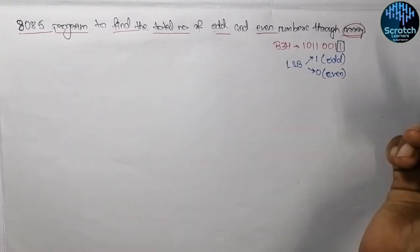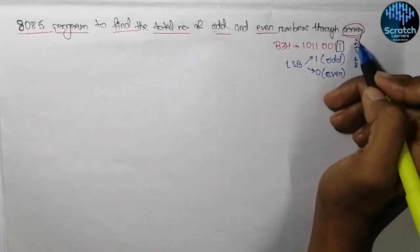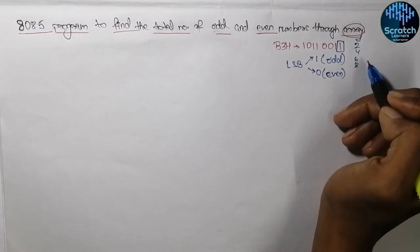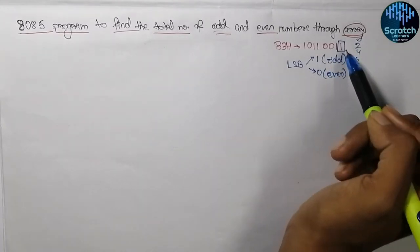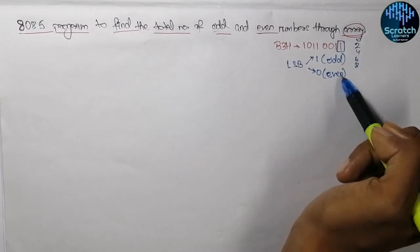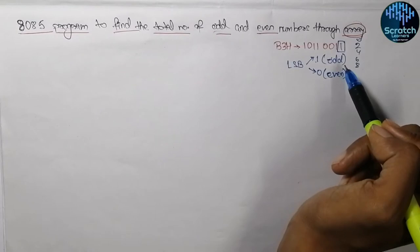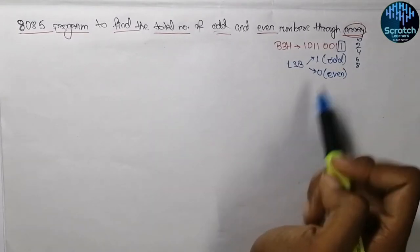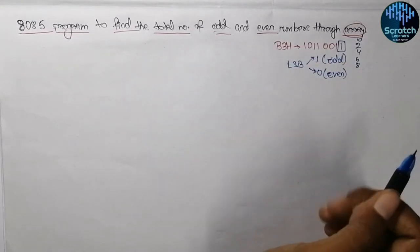In decimal we know that numbers ending with 0, 2, 4, 6, or 8 are even numbers. Similarly, in binary format if the least significant bit is 0 then it is an even number, and if it is 1 then it is an odd number. So here we will be checking this condition on an array of numbers.